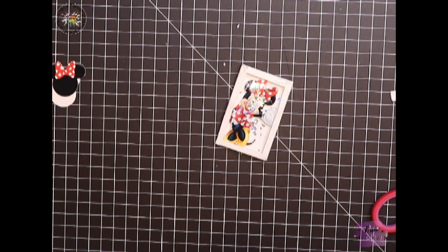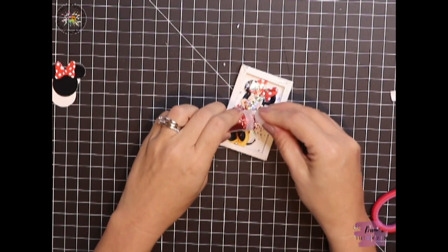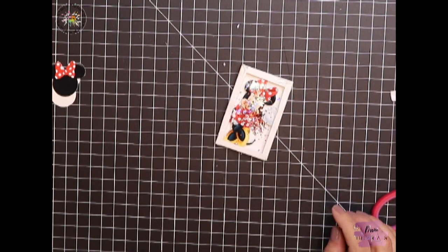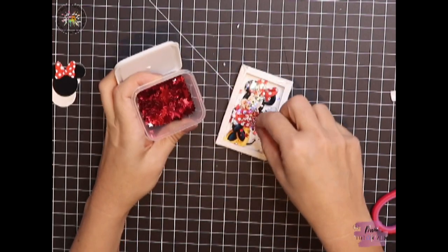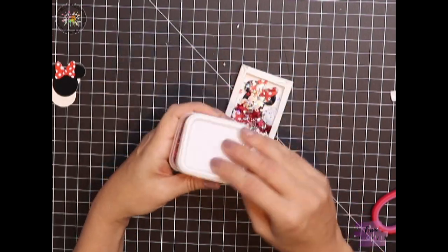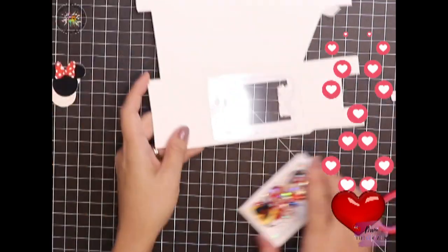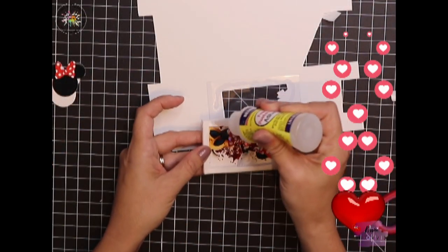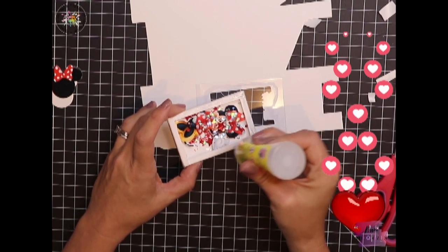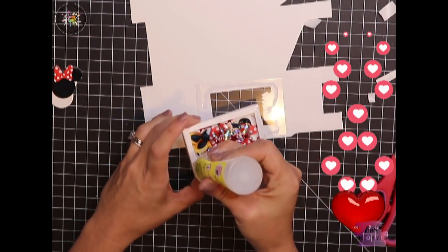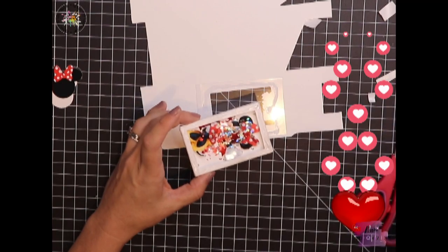You can use any shiny glitter, pearls, little details, stars, whatever you have at home that matches. I'm using some little red stars and red glitter, and we're going to shake it around and put it in the back.